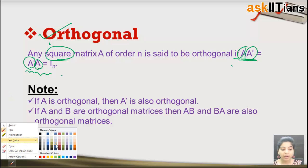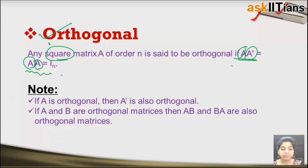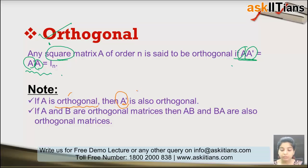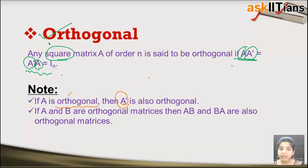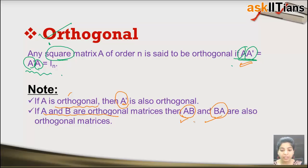Important properties of orthogonal matrices: if A is orthogonal, then A^T is also orthogonal. If A and B are both orthogonal matrices, then their products AB and BA are also orthogonal. To prove AB is orthogonal, you need to show that AB multiplied by (AB)^T equals the identity matrix I.